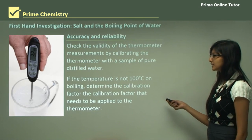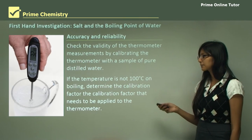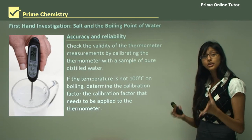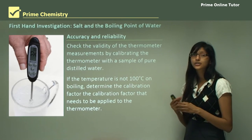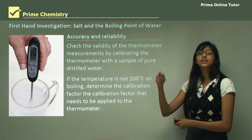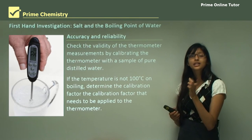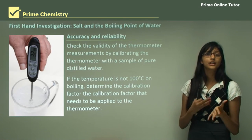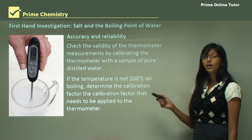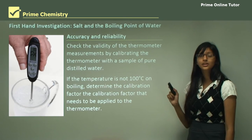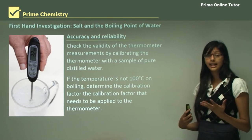If the temperature is not 100°C on boiling, determine the calibration factor that needs to be applied to the thermometer. For example, if you know a substance has a boiling point of 105°C but the thermometer reads 110°C, you know the calibration factor is 5°C above the actual measurement. So when conducting your experiment, if the thermometer always reads 5°C above the actual value, you can apply that calibration factor to get an accurate result.